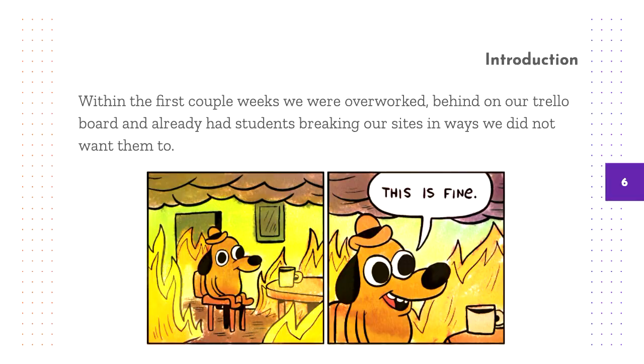Within the first couple of weeks we were overworked, patching infrastructure as we went. This presentation is going to be somewhat disjoint — we're going to talk about what we did, what went wrong immediately, and then how we solved it. Here's what went wrong, here's how we fixed it, and the lessons we learned along the way.